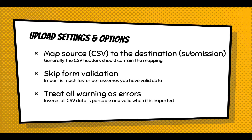The upload settings: once you upload that CSV, you can map your source columns to your destination submission. Generally your CSV headers should contain the mapping. You can skip form validation — the import is much faster, but assumes you have valid data. With each record it creates a form, passes your data into it, and validates it. If you have custom logic, this is the best way to trigger that custom validation logic. You can also treat all warnings as errors. For example, with file uploads, the URLs are parsed and it checks that the file exists. If it doesn't, it throws a warning but still executes the import. If you really want clean data, you should check that option so every record is parsed exactly as you'd expect, or you can review those warnings and keep updating your spreadsheet until you eliminate them.